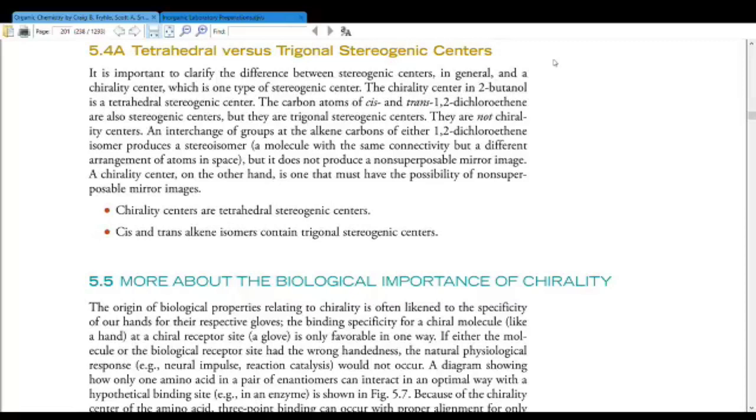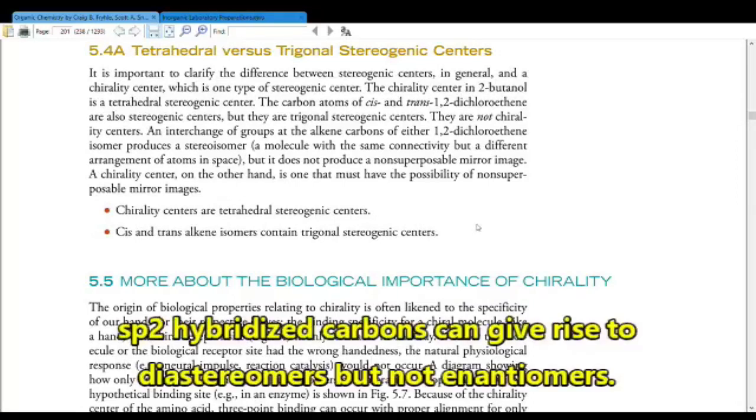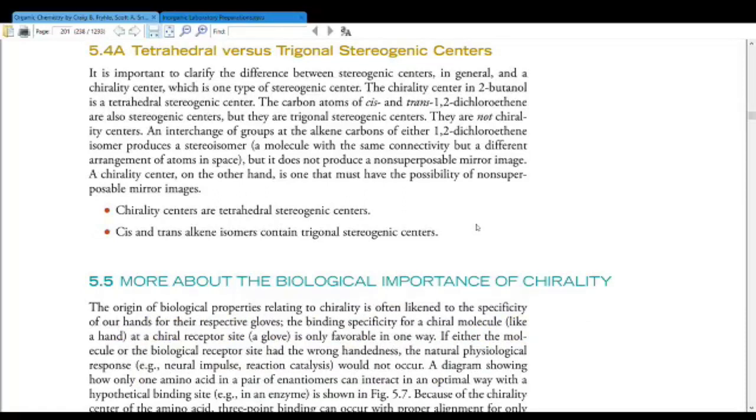Remember from the last video, chirality centers are tetrahedral stereogenic centers, meaning we're talking SP3 hybridized carbons. Cis and trans alkene isomers contain trigonal stereogenic centers, because SP2 hybridized carbons are trigonal planar. You can always superpose a flat triangle over its mirror image if you rotate it. Same for SP hybridized carbons, which are linear.